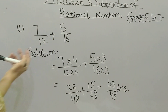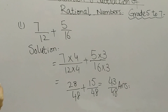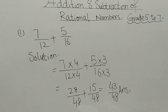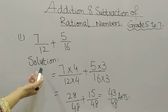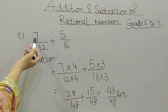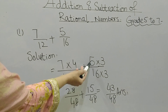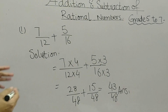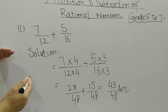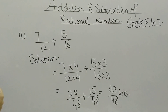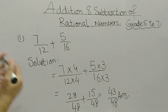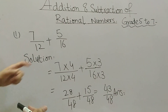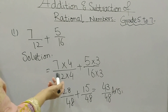In these two fractions the denominators are different, so we need to make the denominators the same. For 7 by 12 and 5 by 16, we will make their denominators the same. You can do this by finding the LCM — reading the tables of 12 and 16 to find their common multiple. This is called the LCM method.